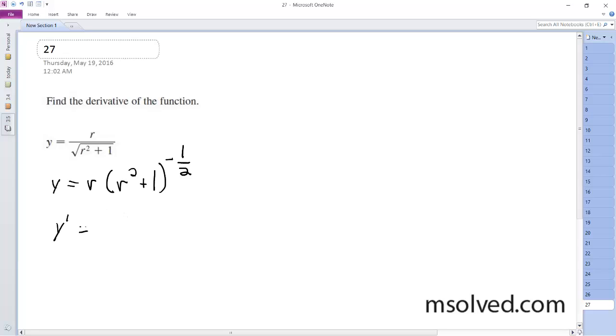So starting off, y prime is going to be equal to just the derivative of the first part, so it's going to be 1 times quantity r squared plus 1 raised to the negative 1 half.